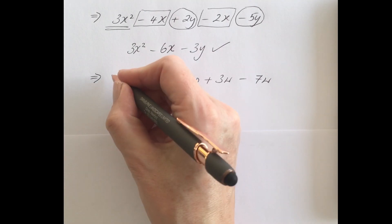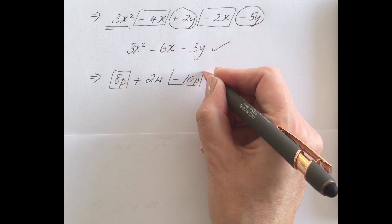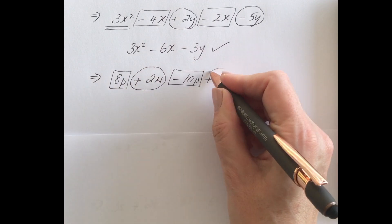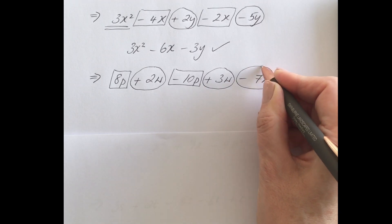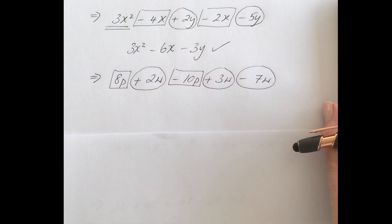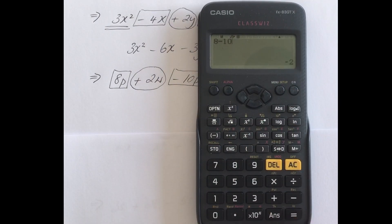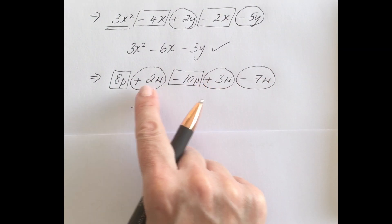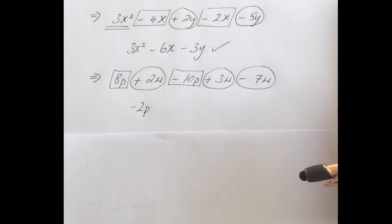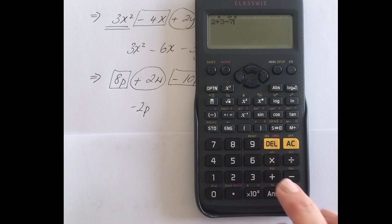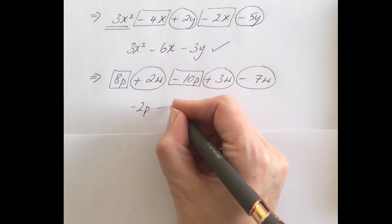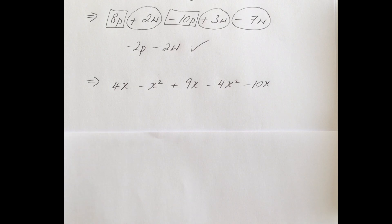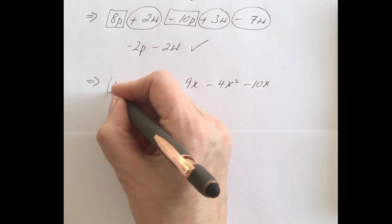This time we're dealing with p's and w's. I'm going to box the p terms — always include the sign to the left — and circle the w terms, again including the sign to the left. The p terms: 8p minus 10p — 8 take away 10 is minus 2, so that's minus 2p. The w terms: 2w plus 3w minus 7w — 2 plus 3 minus 7 is negative 2, so that's minus 2w. Final answer: −2p − 2w.